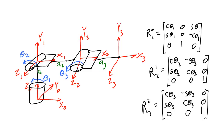It looks like we're done with the rotation matrices for this manipulator. We found the rotation from zero to one, the rotation from one to two, and the rotation from two to three.